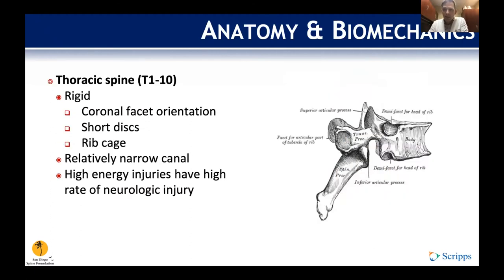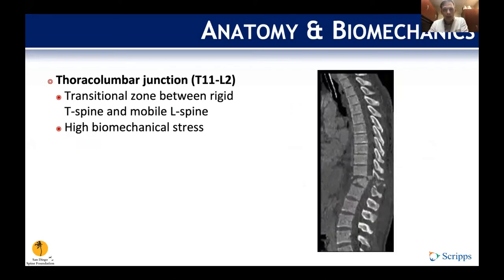The T-spine has a more coronal orientation of the facets, smaller discs, and obviously the rib cage provides a lot of support, making it a more rigid structure. There is a high rate of neurologic injury with high-energy trauma to this region. The thoracolumbar junction is important because it's a transition zone from the relatively rigid T-spine to a very flexible lower lumbar spine, concentrating a tremendous amount of stress at this region.